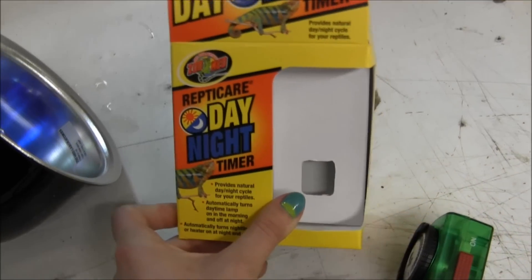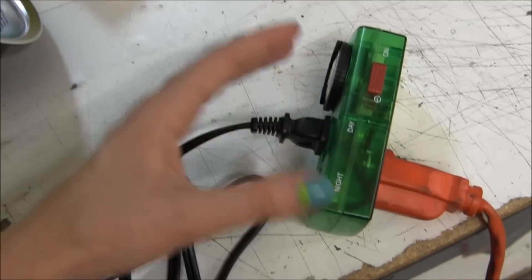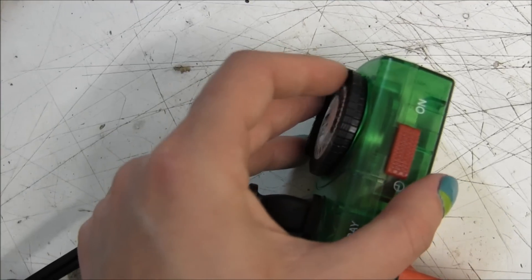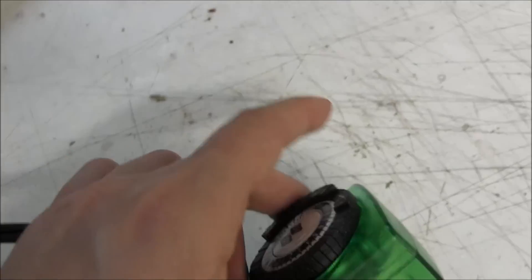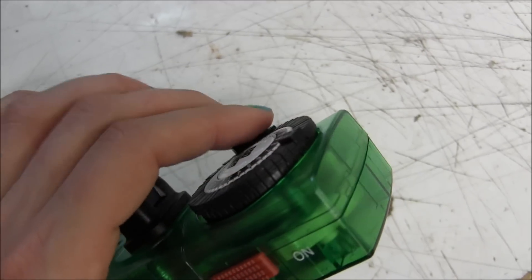This particular one is the Zoo Med ReptiCare Day-Night Timer. The same kind of up or down as far as little tabs go is how it's going to work for pretty much any of these analog timers.